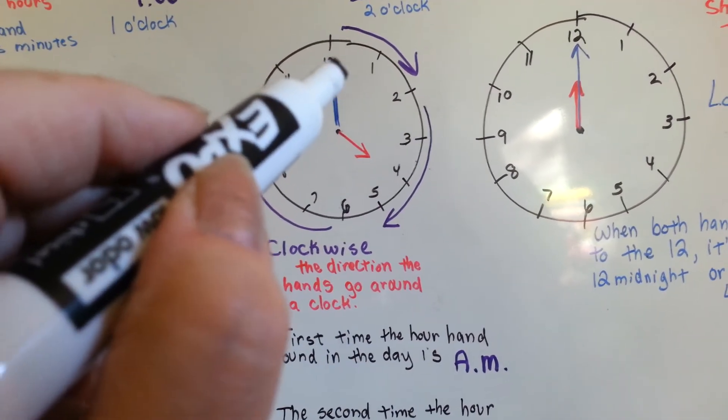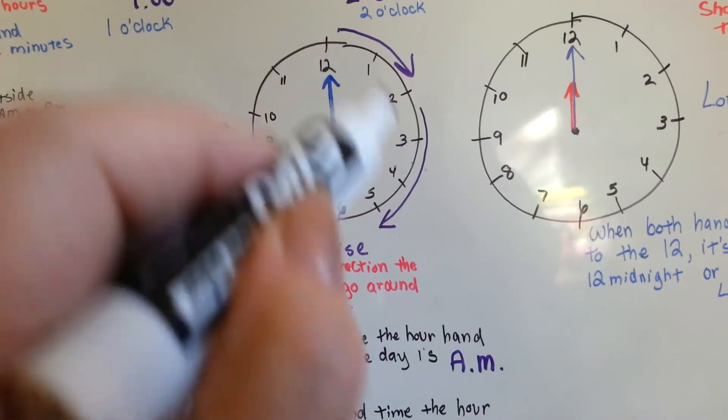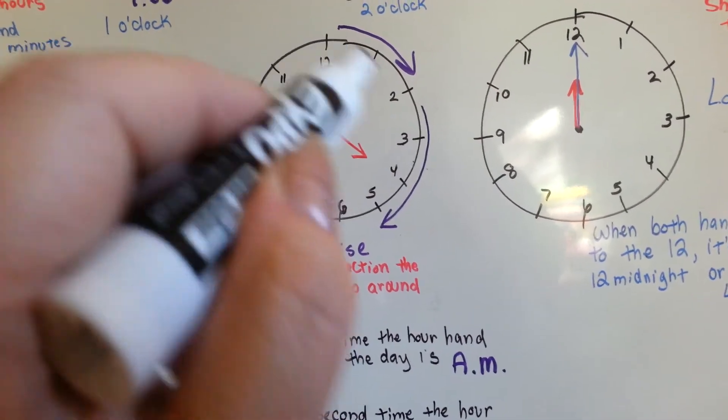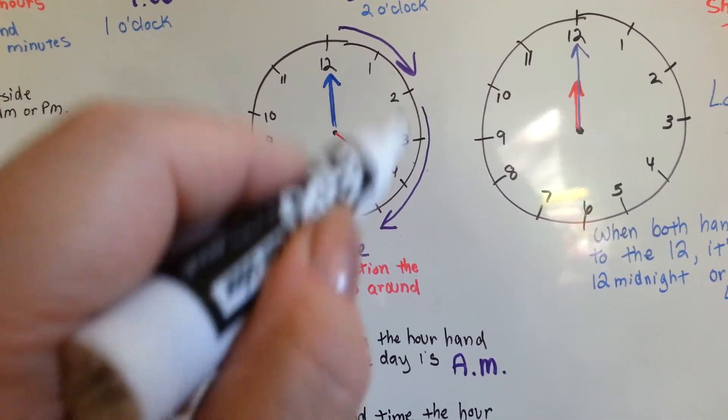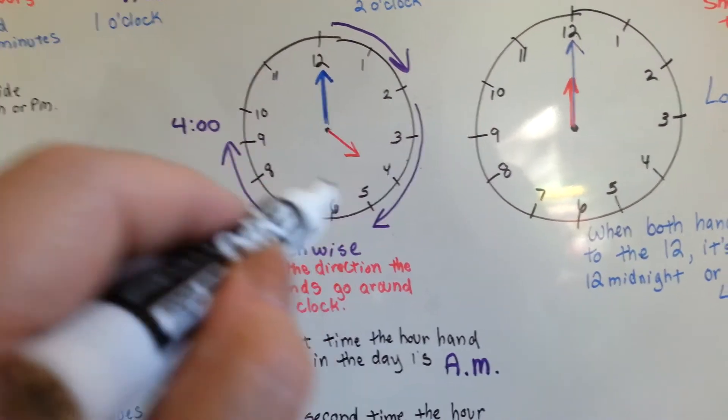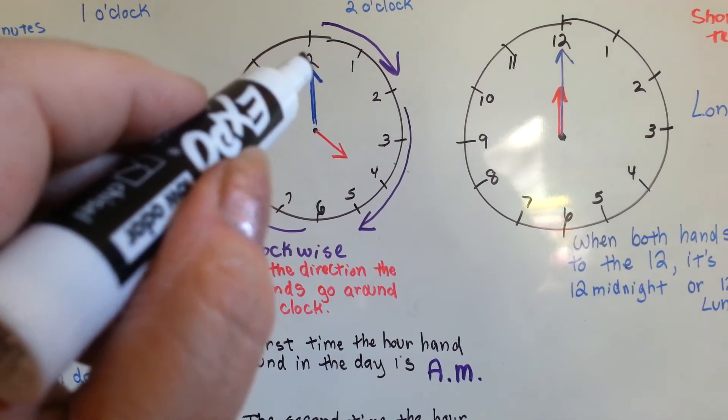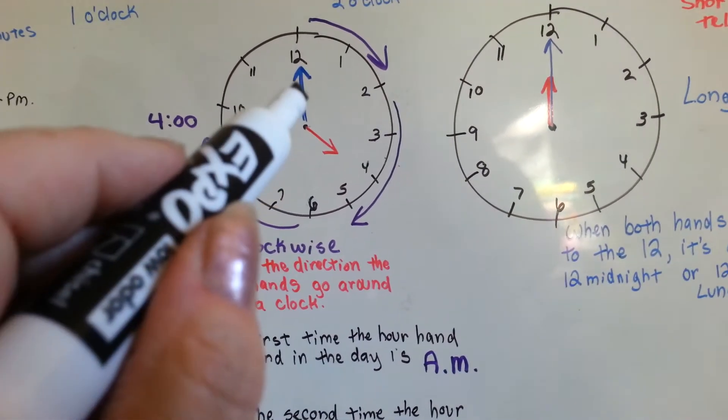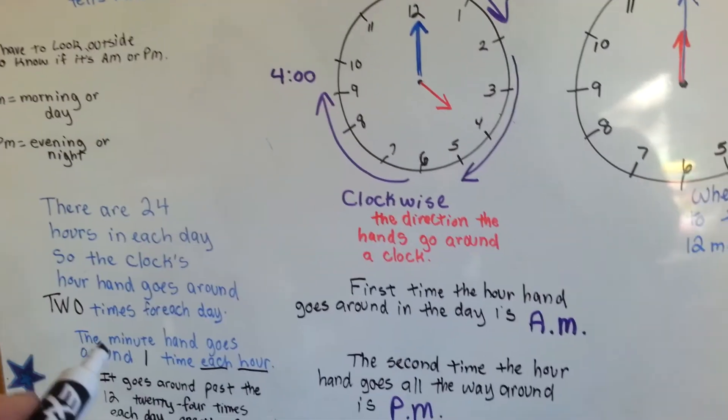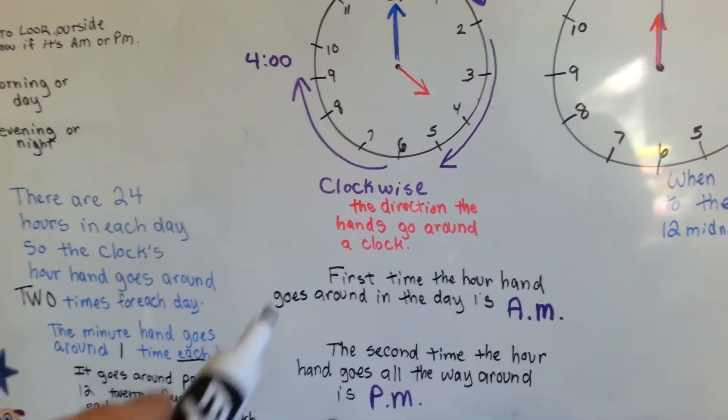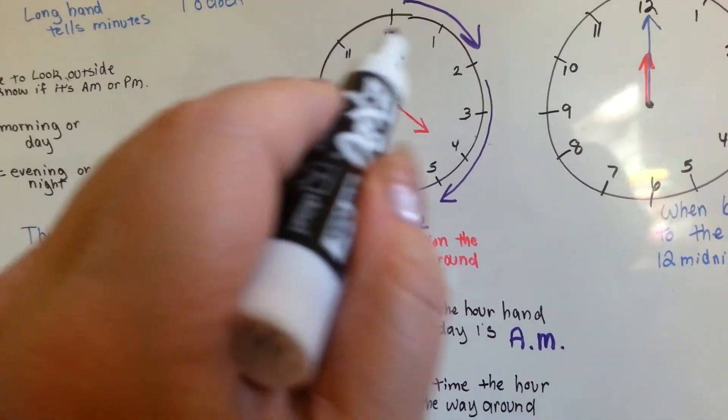And this minute hand is going to go 1 o'clock, 2 o'clock, 3 o'clock, all the way through 12 o'clock. Now it's noon. Now it has to do it all the way again to get to midnight. So the minute hand is going around 24 times, but the hour hand is only going around two times.